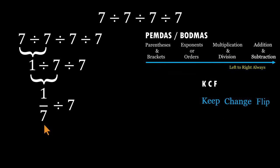Keep the first fraction, 1 over 7. Change division to multiplication. Flip the last 7 into 1 over 7.